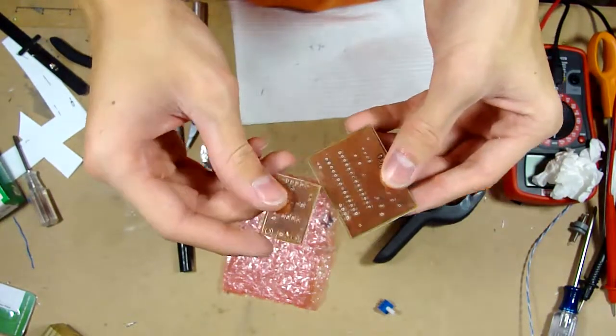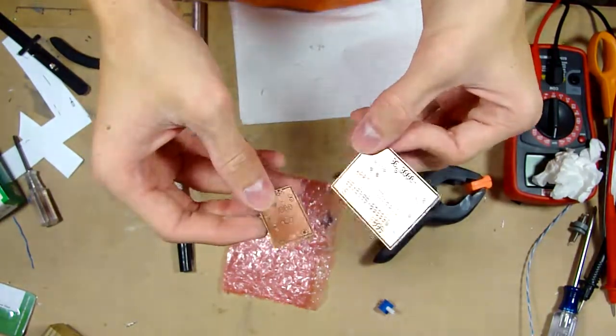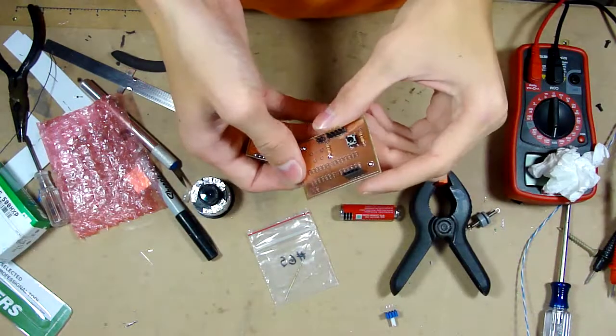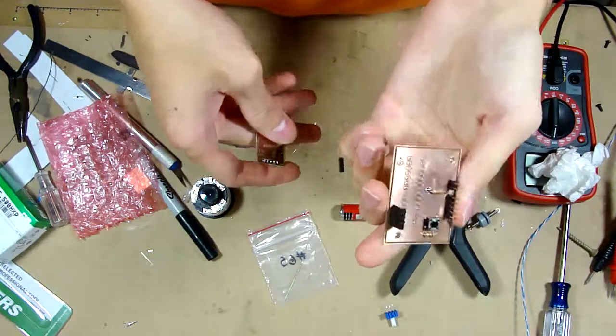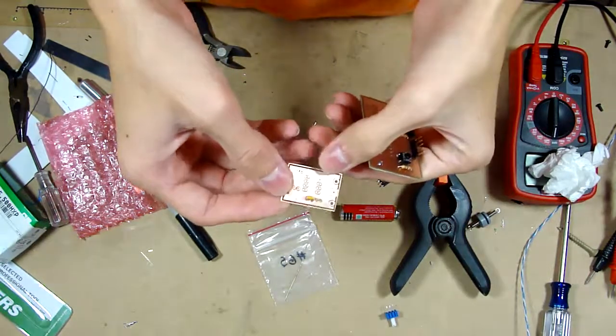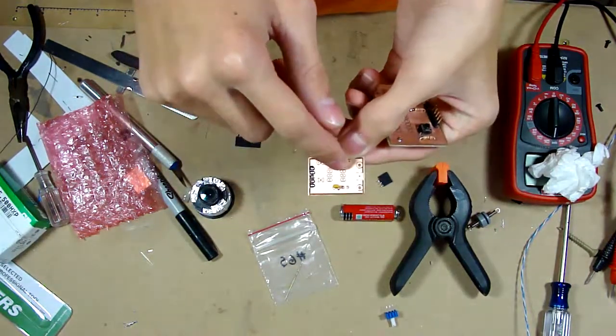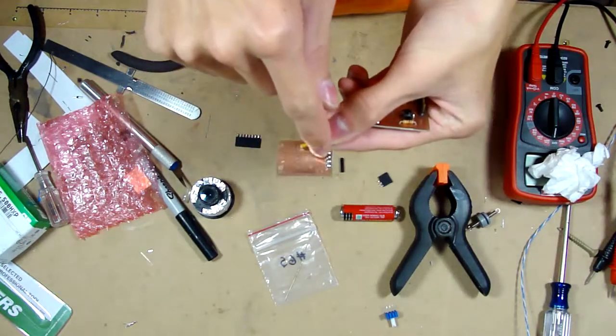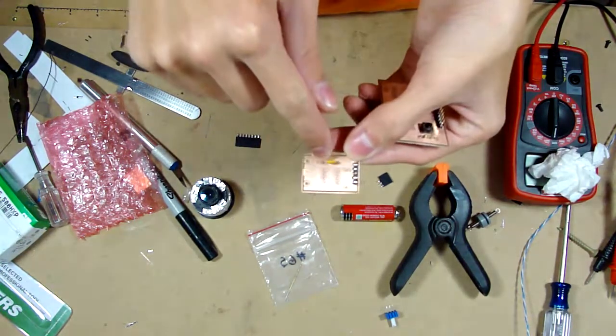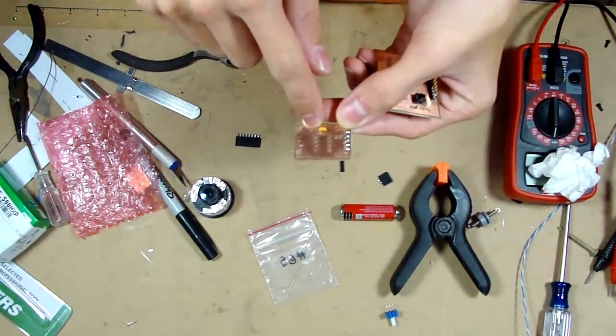You can see I've got the boards populated with some of the parts. This one still needs the real-time clock chip right there, 2.2k resistors right there, and a timing crystal right there.